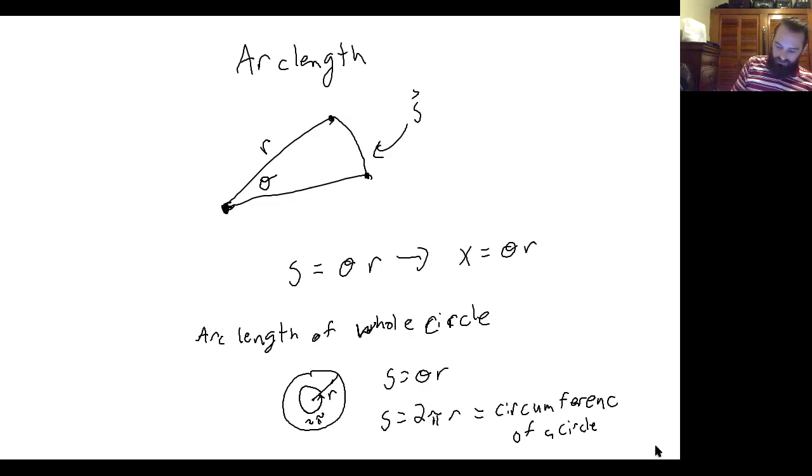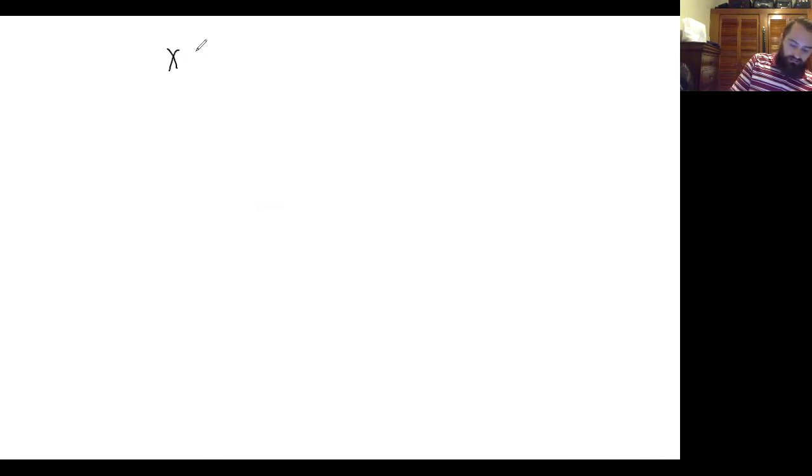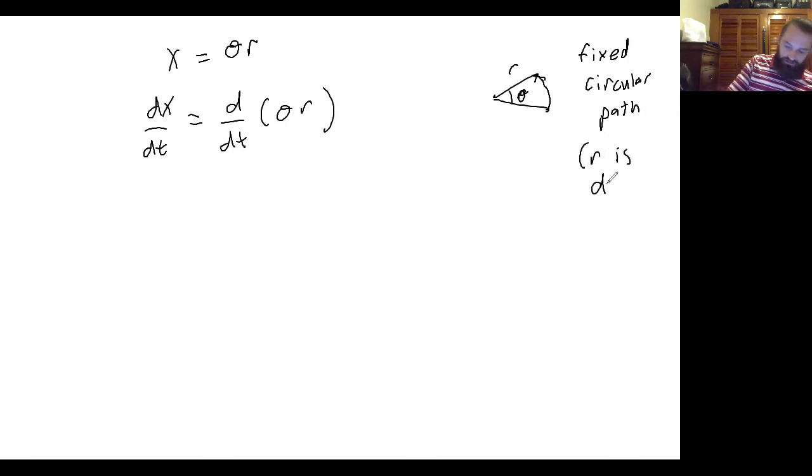So there's a couple ways to think about it. One way: if we start with this for position, if we just take the time derivative, now if we're looking at something that's moving on a fixed circular path, meaning that r doesn't change or is constant, then taking this time derivative you get d theta dt times r, and d theta dt is just omega r.